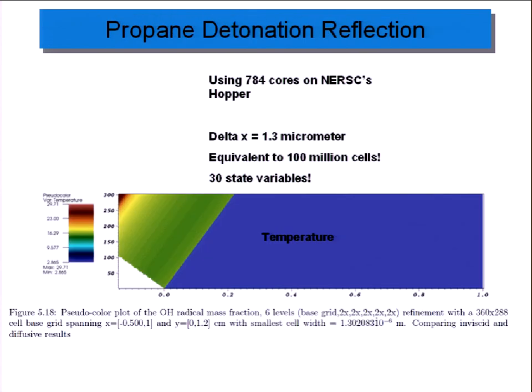Shown here are some results I've recently made for propane. To do this, I had to use a supercomputer. In particular, I used Hopper with 784 cores and left it in the queue for about three weeks. This is a very expensive computation. Using adaptive mesh refinement, if I used a uniform grid, it would be equivalent to having 100 million cells. For this computation, you have 30 state variables. This is a multi-scale problem. This distance is one centimeter, and the smallest cell size is about a micrometer.